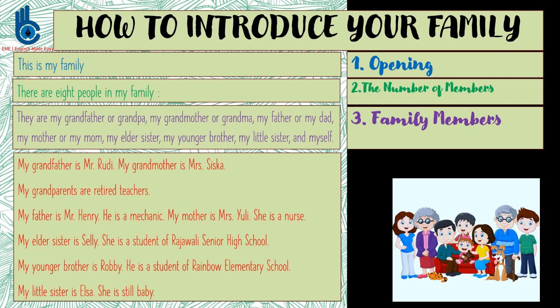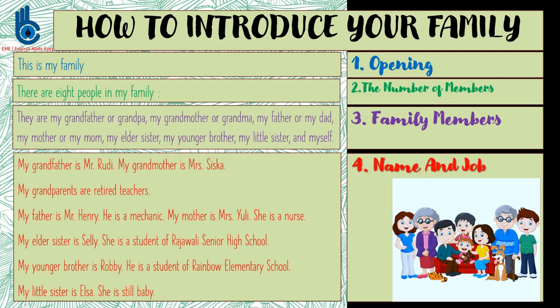He then described each member: 'My grandfather is Mr. Rudy. My grandmother is Mrs. Ciska. My grandparents are retired teachers. My father is Mr. Henry. He is a mechanic. My mother is Mrs. Yuli. She is a nurse. My elder sister is Sally, a student of Rajawali Senior High School. My younger brother is Robbie, a student of Rainbow Elementary School. My little sister is Elsa. She is still a baby.' These are all examples of telling the name and job of family members.